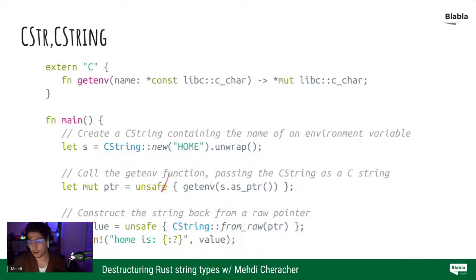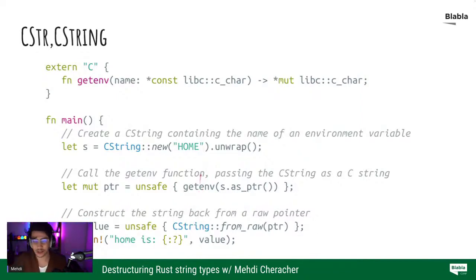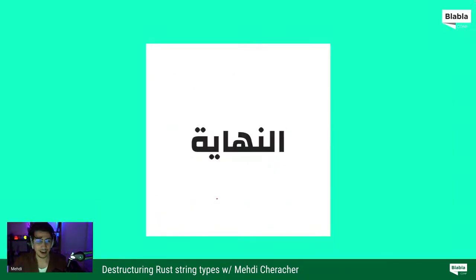Notice that these two operations are clearly unsafe — you're calling into a foreign function, this is an FFI call, and the function for all purposes could not be guaranteed safe. And that's about it. I hope this talk can at least shed some light on the string types in Rust. I can answer questions if you have them.